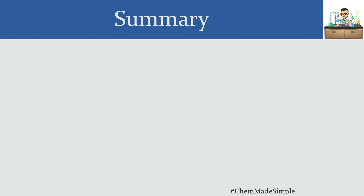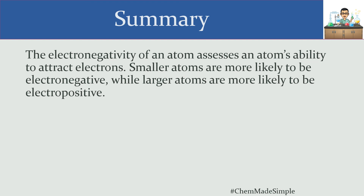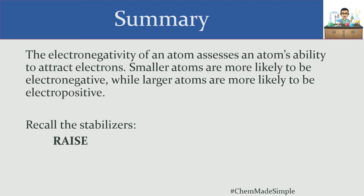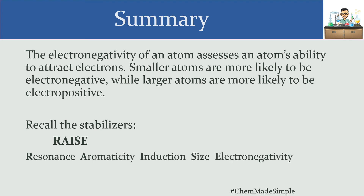To summarize: electronegativity assesses an atom's ability to attract electrons, and the details of how it's determined vary by scale. Smaller atoms are going to be more electronegative, while larger atoms are more likely to be electropositive — meaning electrons are more likely to leave them. Electronegativity is one of several factors used to assess the stability of an element; the others are resonance, aromaticity, induction, size, and electronegativity. Hopefully you learned something useful today — please like and subscribe, and I'll see you at the next lesson.